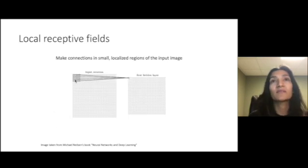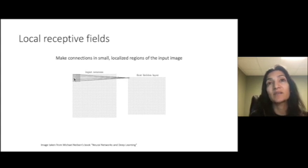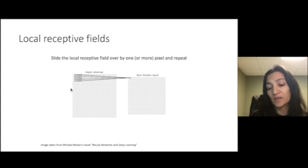In a local receptive field each neuron in the first layer is only responsible for looking at a small locally connected subset of neurons in a previous layer. Because of this image structure you can see that this neuron looks only at this patch of the image.